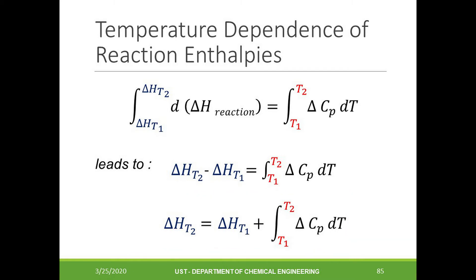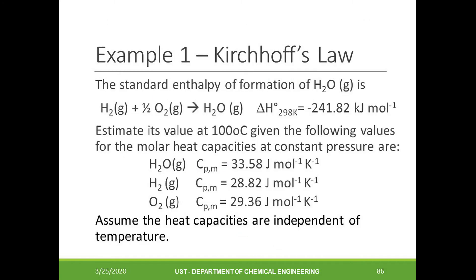What is this enthalpy change at temperature 1? This is basically our reference temperature. For example, if we have the change of enthalpy at 298 Kelvin, then we can use this to calculate the change in enthalpy at any temperature T2. Take note that when you apply the Kirchhoff's equation, we assume that no phase transition takes place in the temperature range of interest.